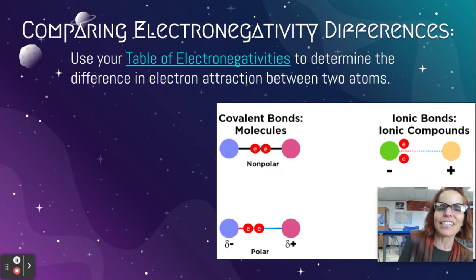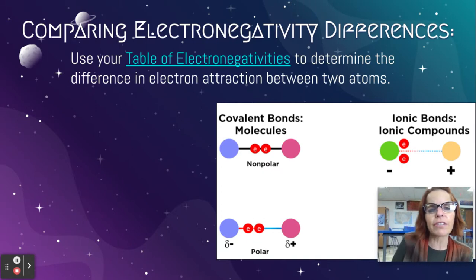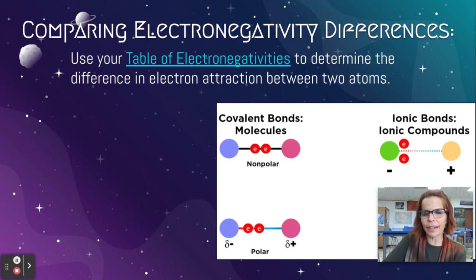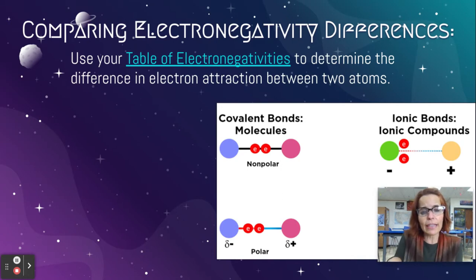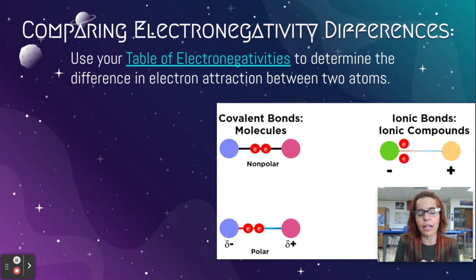Comparing electronegativity differences. Use your table — it's linked right there — to determine the difference in electron attraction between two atoms. I really want you to take a look at this diagram because I think it shows it really well. When we have a covalent bond, the two atoms are sharing those electrons evenly. Notice that the electrons are halfway in between the two atoms.